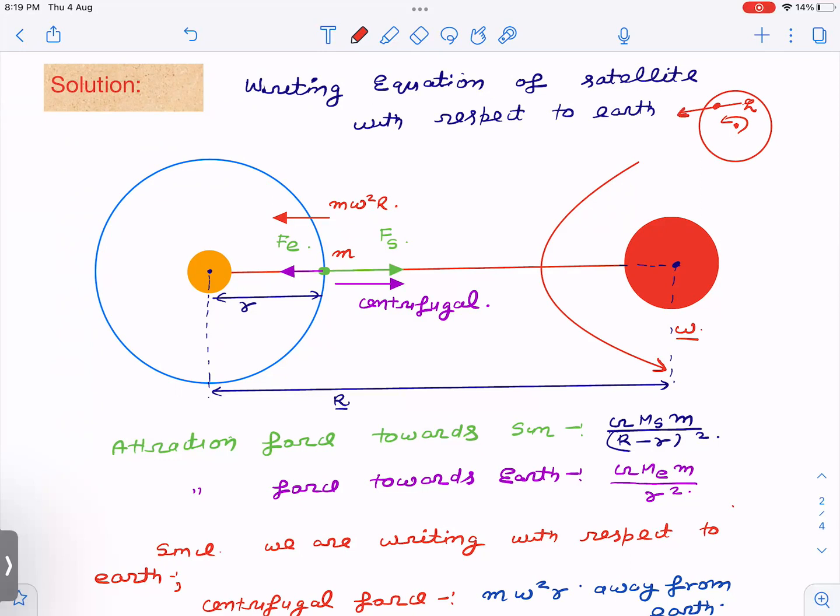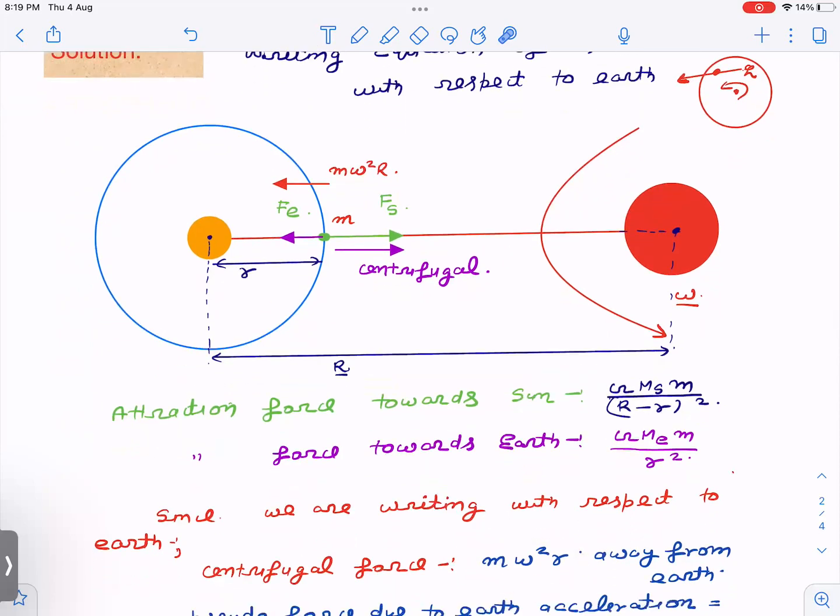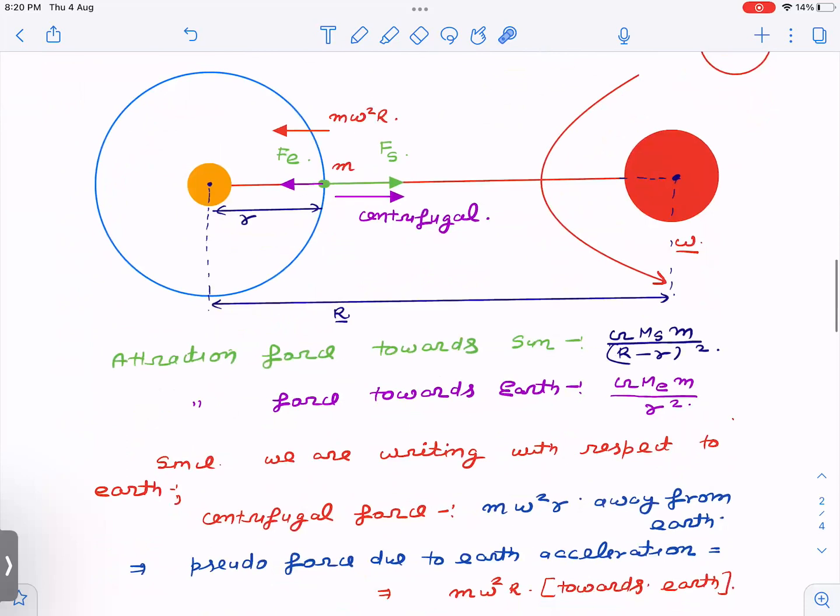So here, let us assume the observer is at the center. With respect to this observer, the pseudo force, the centrifugal force, will be radially outward. How much? m r ω², where r is the distance.